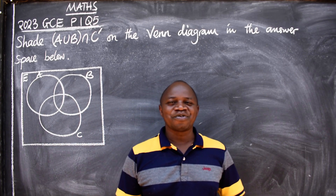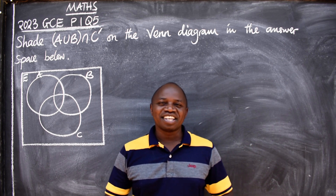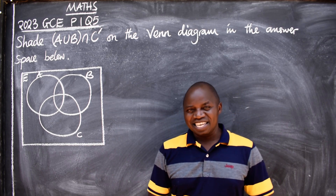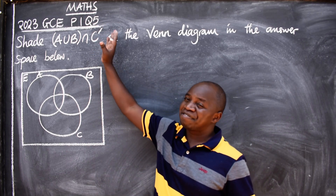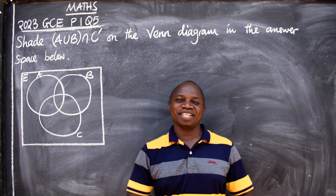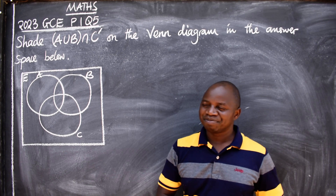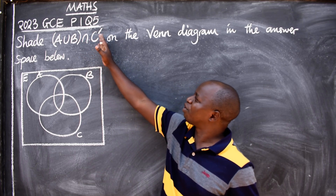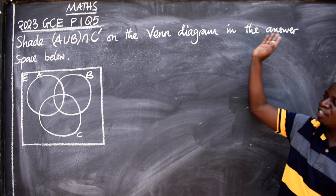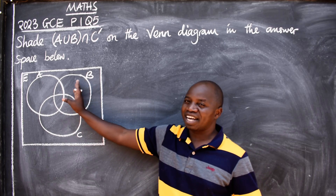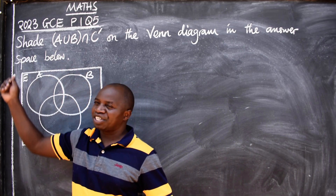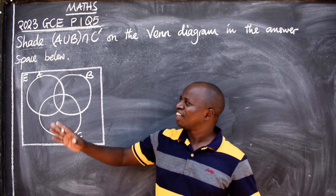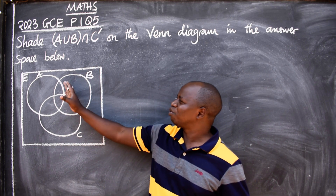Hello everyone, hope you are well. This is Mr. Kalunga and in this presentation we want to look at this question from the 2023 GCE Paper 1, question number 5. This is mathematics. The question says: shade (A∪B)∩C' on the Venn diagram in the answer space below. You'll be provided a blank Venn diagram, and they ask you to shade it. This topic is sets.